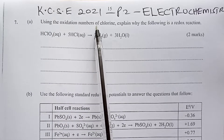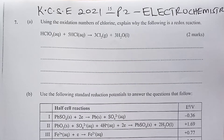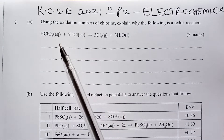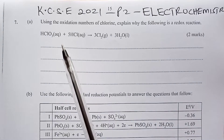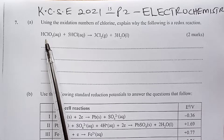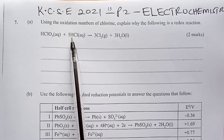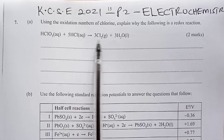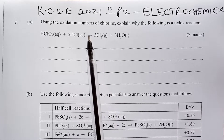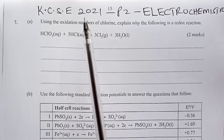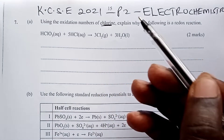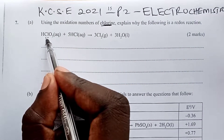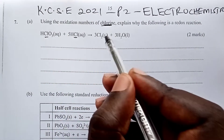Using oxidation numbers of chlorine, explain why the following is a redox reaction. We have this compound here reacting with hydrochloric acid to form chlorine and water. We are being told to use oxidation numbers of chlorine only. So you can see chlorine is here, chlorine is here, and chlorine is here.